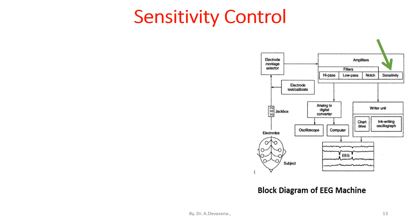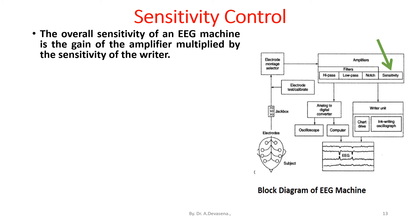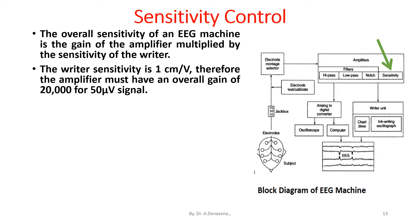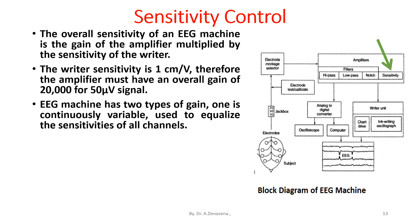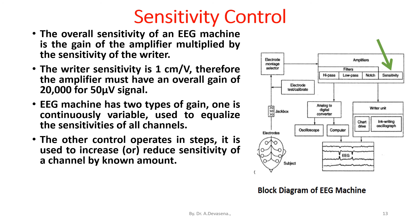Sensitivity control. The overall sensitivity of an EEG machine is the gain of the amplifier multiplied by the sensitivity of the writer. The writer's sensitivity is 1 cm per volt. Therefore, the amplifier must have an overall gain of 20,000 for a 50 microvolt signal. EEG machine has two types of gain: one is continuously variable, used to equalize the sensitivities of all channels; the other operates in steps, used to increase or reduce the sensitivity of a channel by a known amount. This control is usually calibrated in decibels.